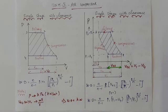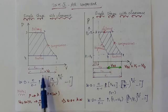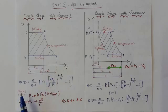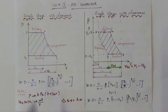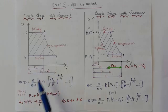So P1V1 — V1 is also equal to stroke volume. That's why we consider the clearance volume. In this case, there is no clearance, so V1 is equal to the stroke volume.